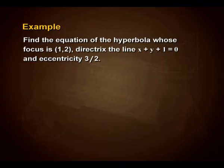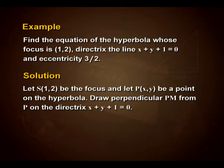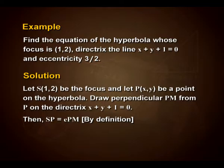Let us look into one example. Find the equation of the hyperbola whose focus is (1, 2), directrix the line x + y + 1 = 0, and eccentricity 3/2. Let S(1, 2) be the focus and let P(x, y) be a point on the hyperbola. Drop perpendicular PM from P on the directrix x + y + 1 = 0. Then SP = e × PM by definition.